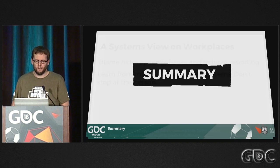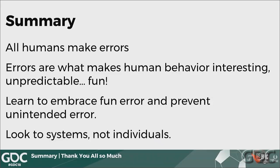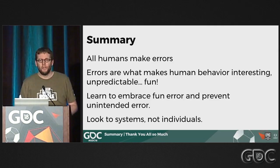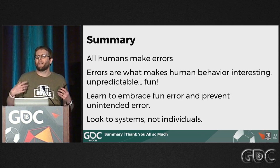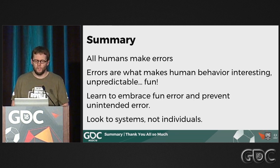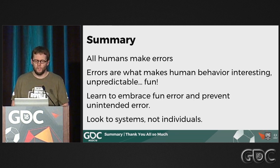Summary: all humans make errors — to err is human. Errors are what make human behavior interesting, unpredictable, and fun. We use errors all the time in game design, and we want those intentional errors — the challenge and fun of games — to occur. What we don't want are the unintended ones that make players frustrated and leave our games. To do that: embrace fun error, prevent unintended error, and look to systems both within our games and within our workplaces to really improve.